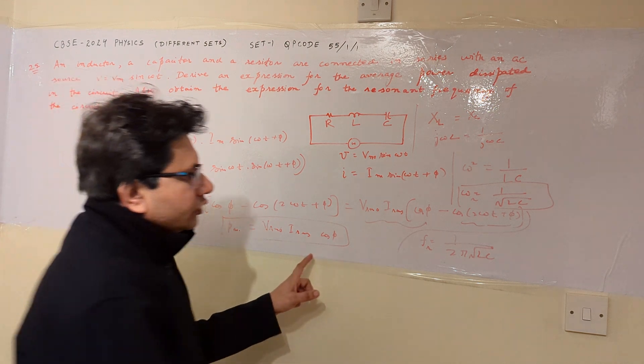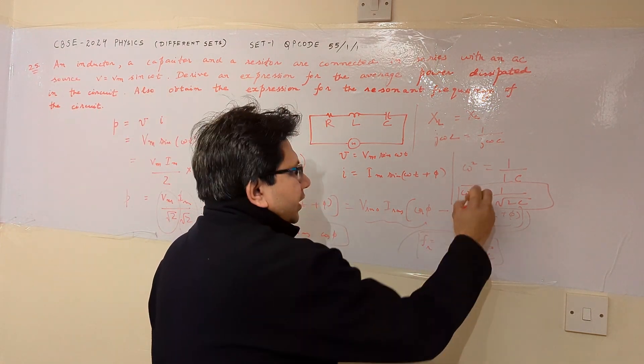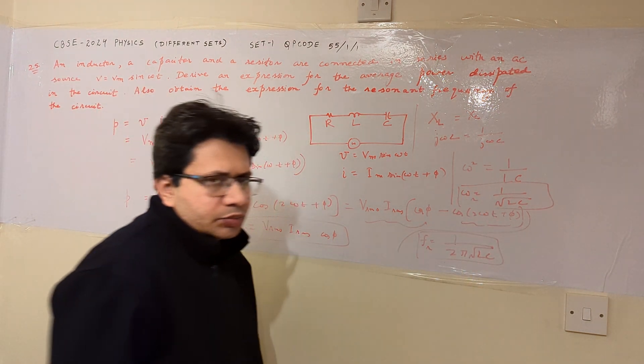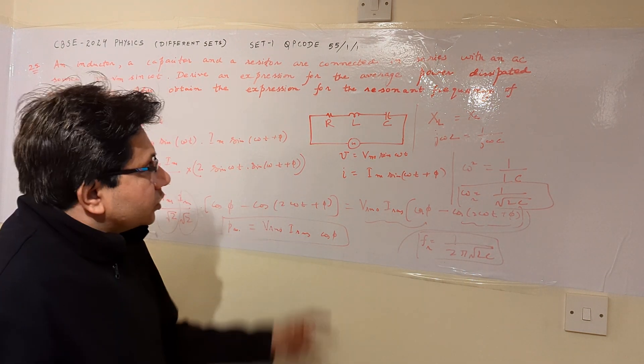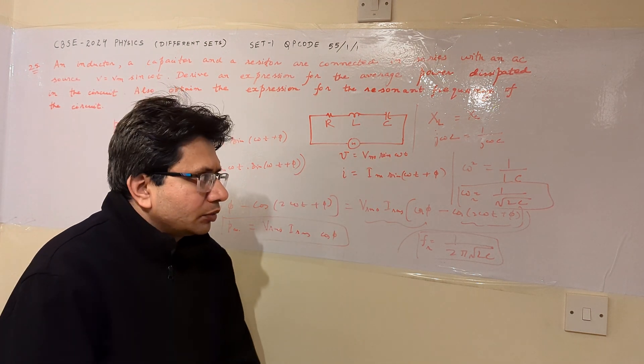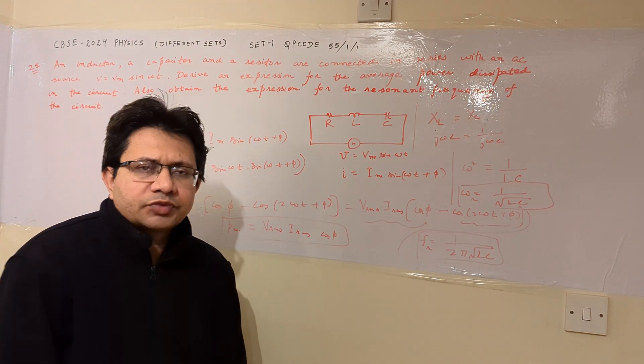So this is the resonant frequency in hertz, and this is the resonant frequency in radians per second. This completes the derivation of the second part. Hope you understand the solution. Thank you.